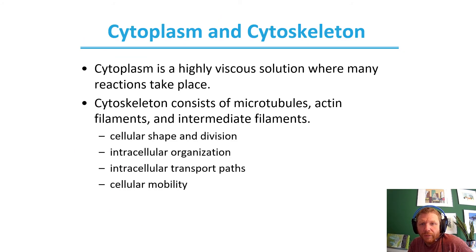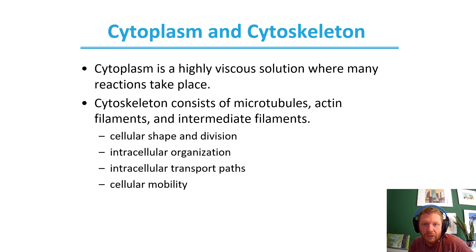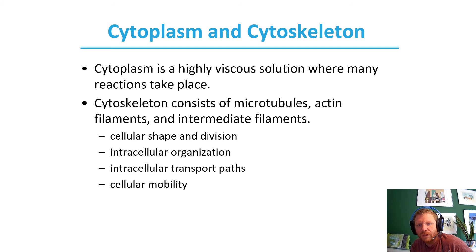The cytoplasm and cytoskeleton: cytoplasm is a highly viscous solution where many reactions are going to take place. The cytoskeleton consists of microtubules, actin filaments — actin as a protein — and intermediate filaments. They provide cellular shape and division, intracellular organization, intracellular transport paths, and cellular mobility.